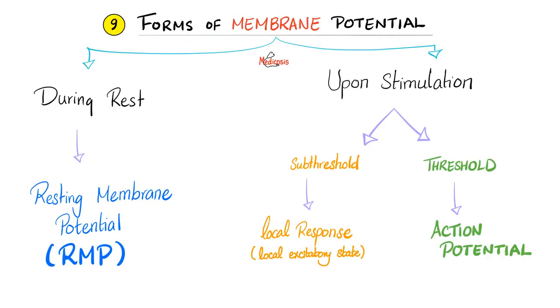Forms of membrane potential: During rest, we call it the resting membrane potential. Upon stimulation, it depends. If you give me enough intensity of the stimulus, aka threshold, I'll give you an action potential. But if you give me a subthreshold, I'll give you a local response. This is nerve physiology in a nutshell. If you understand the resting membrane potential, the action potential, and the local response, it's going to be a piece of cake.